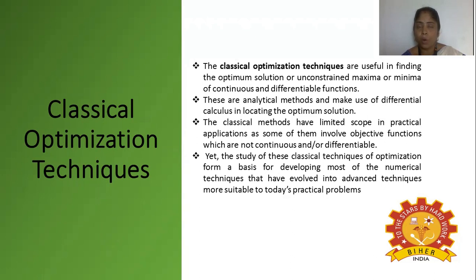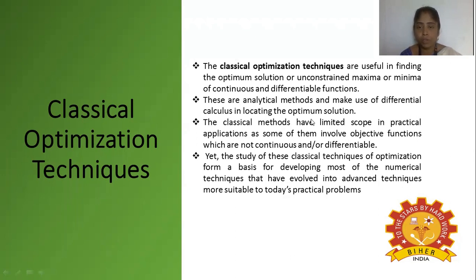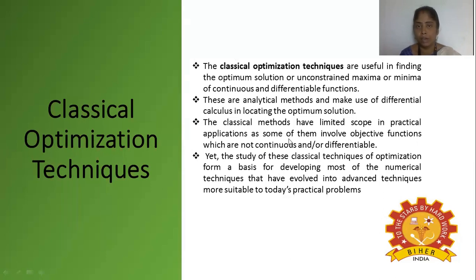We analyze whether the product is qualitatively or quantitatively acceptable — optimization must compromise both. We use calculus to locate the optimum solution. However, classical methods have a limited scope in practical applications since they involve objective functions that are not continuous and differentiable, which is a practical constraint and disadvantage.